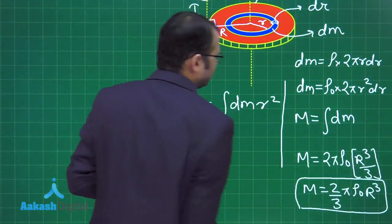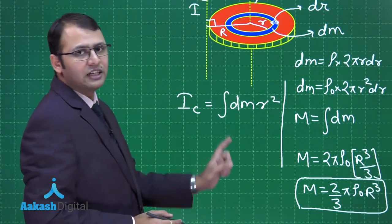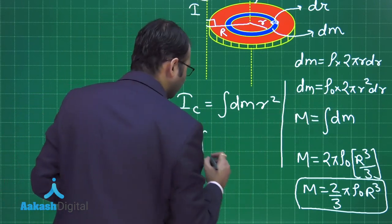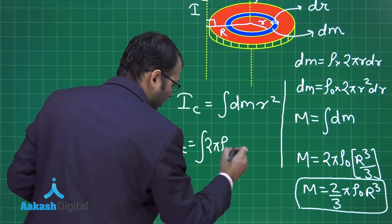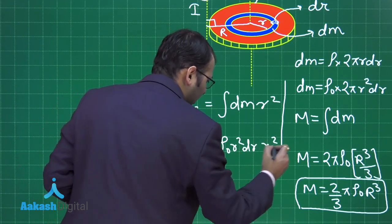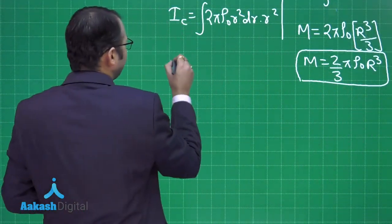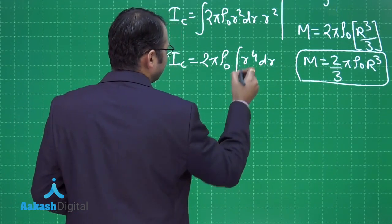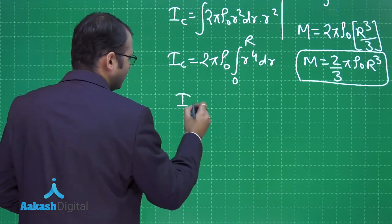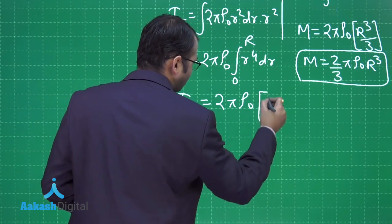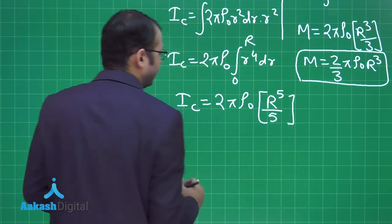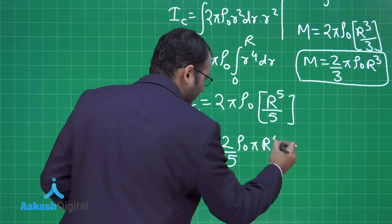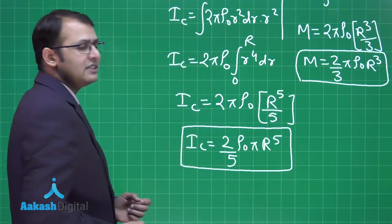Now finding the moment of inertia about the central axis: Ic = ∫dm·r² = ∫2πρ₀r²·r²dr = 2πρ₀∫r⁴dr from 0 to R. Solving: Ic = 2πρ₀·R⁵/5, which gives Ic = (2/5)πρ₀R⁵. The moment of inertia through the central axis and the total mass M are now both known.